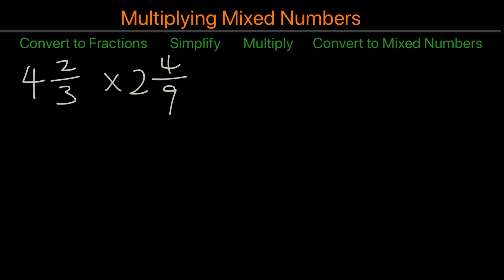In order to multiply mixed numbers, we need to first convert it to fractions, and then simplify if any, then do the actual multiplication, and then converting back to mixed numbers.